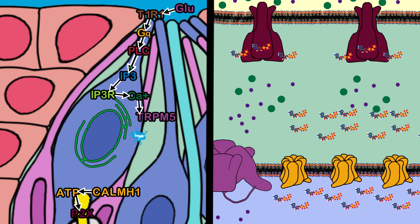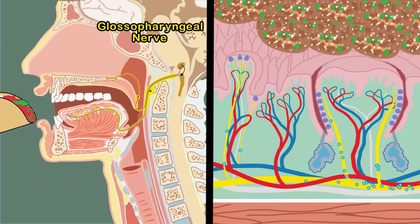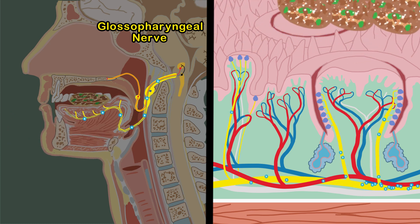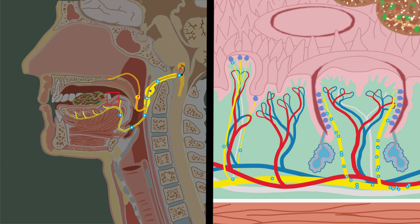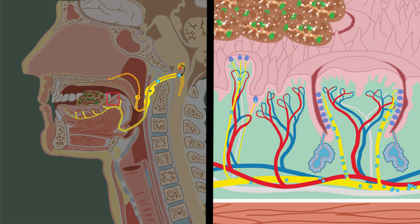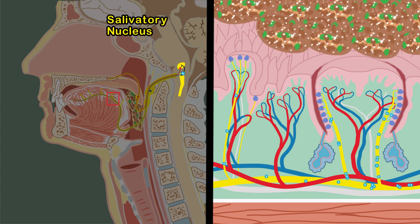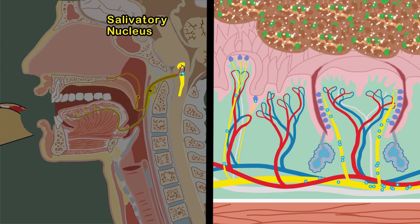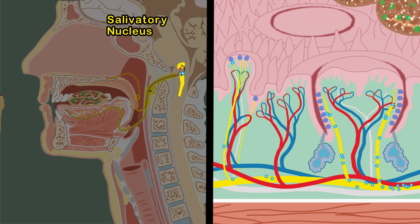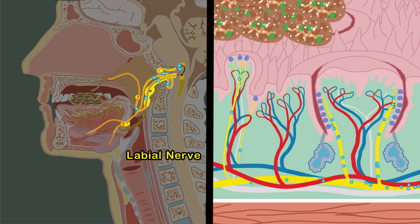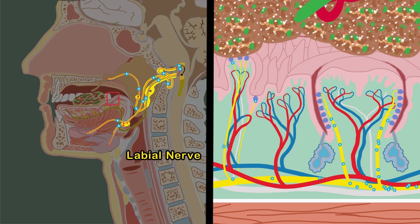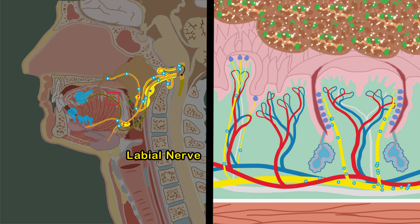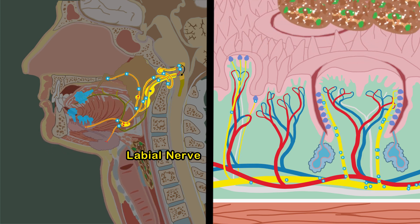The taste signal is transmitted by the glossopharyngeal nerve to neurons located in the nucleus of the solitary tract. Once there, the signals are relayed to the salivatory nucleus, which processes information from various sources. The salivatory nucleus subsequently transmits a signal through sympathetic and parasympathetic nerves to enhance saliva production and saliva proteins on acinar cells.